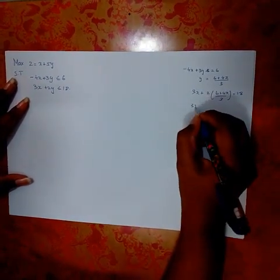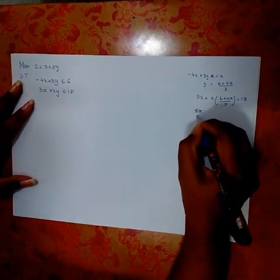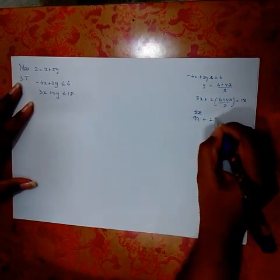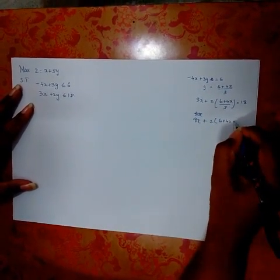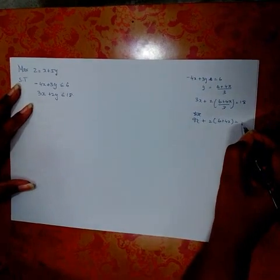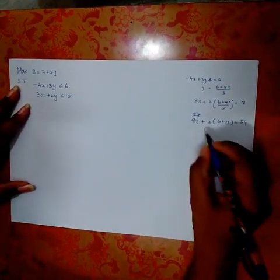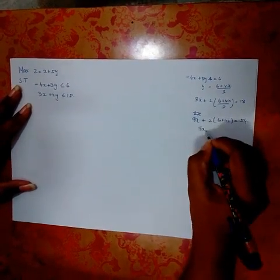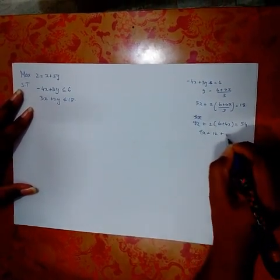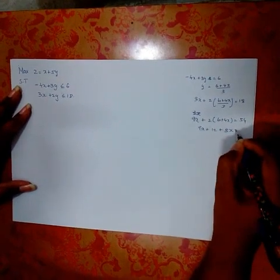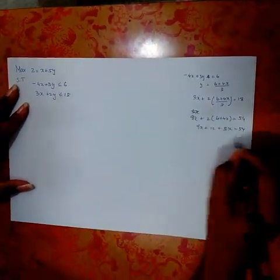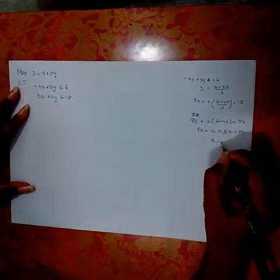Multiplying throughout by 3 I'll be getting 9x + 2(6 + 4x) = 54. Expanding it again: 9x + 12 + 8x = 54.